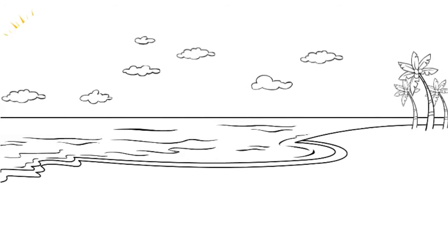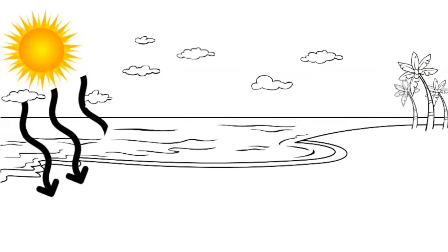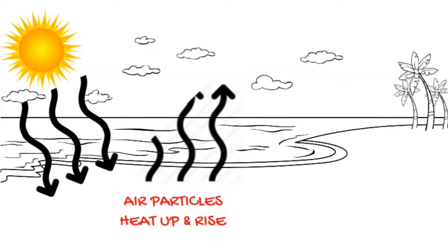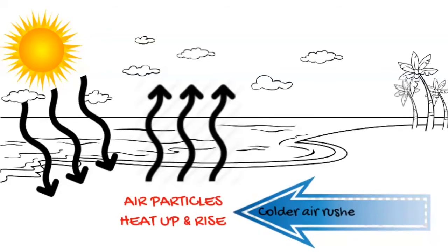The sun is going to be shining down and its rays will heat up the air that's closer to the earth. The air particles will heat up and they'll rise up into the air. Cooler air is going to move in and rush in to take its place.